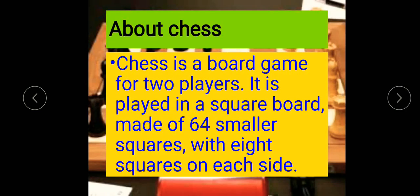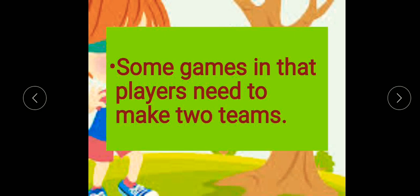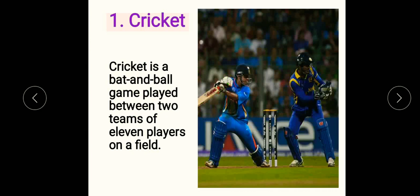Some games require players to make two teams. Cricket is a bat and ball game played between two teams of 11 players on a field — 11 players in one team and 11 in another.